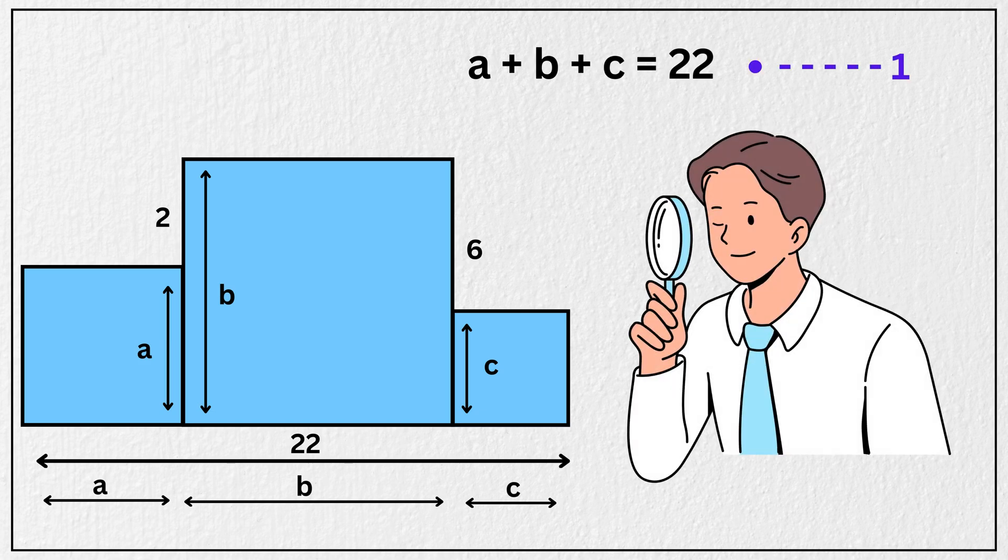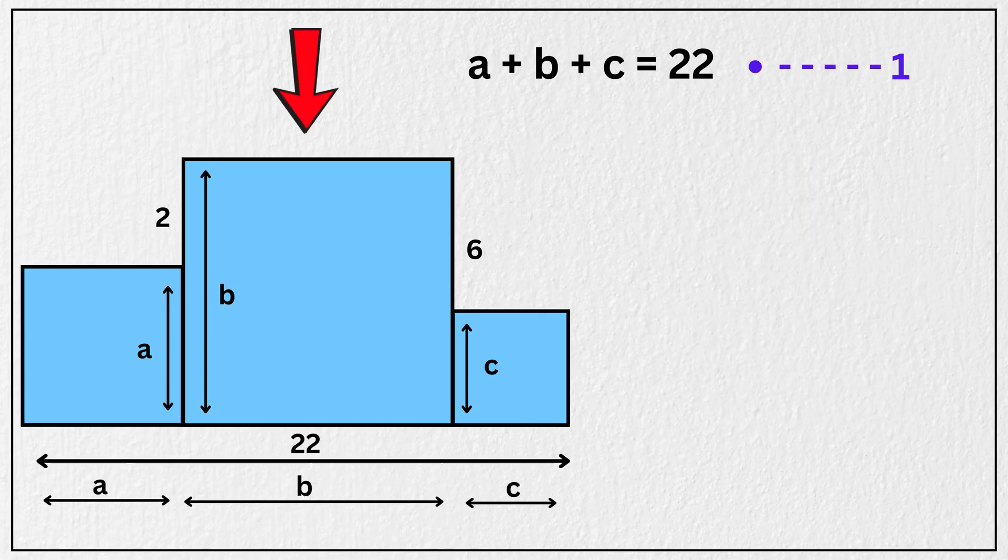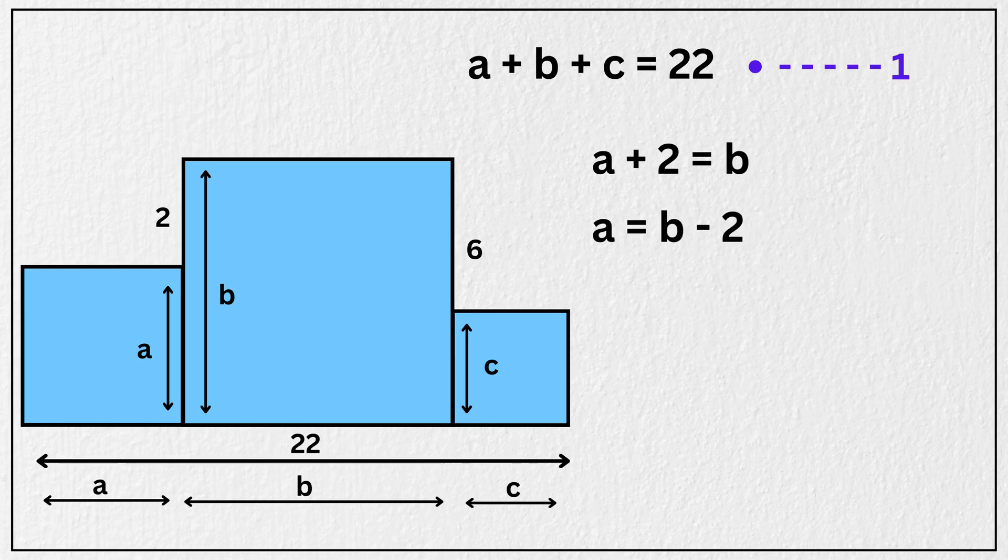Now let's focus on the dimensions of each square a little more closely. Take a look at the middle square, its side length is B. From the diagram, we can clearly see that the total height of this middle square is made up of the height of this smaller square, which we defined as A, plus an extra amount of 2 units. So we can say that A plus 2 is equal to B. And if we subtract 2 from both sides, we have A is equal to B minus 2. Let's call this as equation 2.